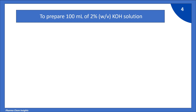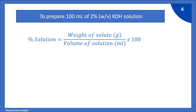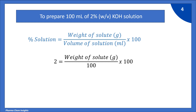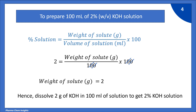Similarly, to prepare 100 ml of 2% weight by volume KOH solution, we use the formula: percent solution equals weight of solute in grams divided by volume of solution in ml, into 100. Putting in the values: 2 equals weight of solute divided by 100, into 100. The 100s cancel, giving weight of solute equal to 2 grams. Hence, dissolve 2 grams of KOH in 100 ml of solution to get 2% KOH solution.